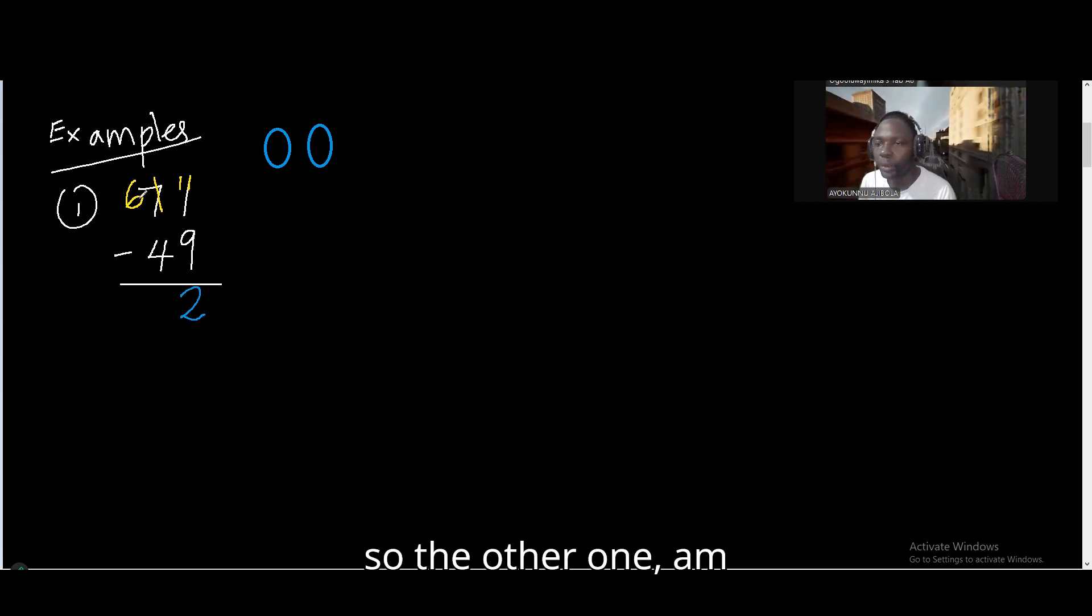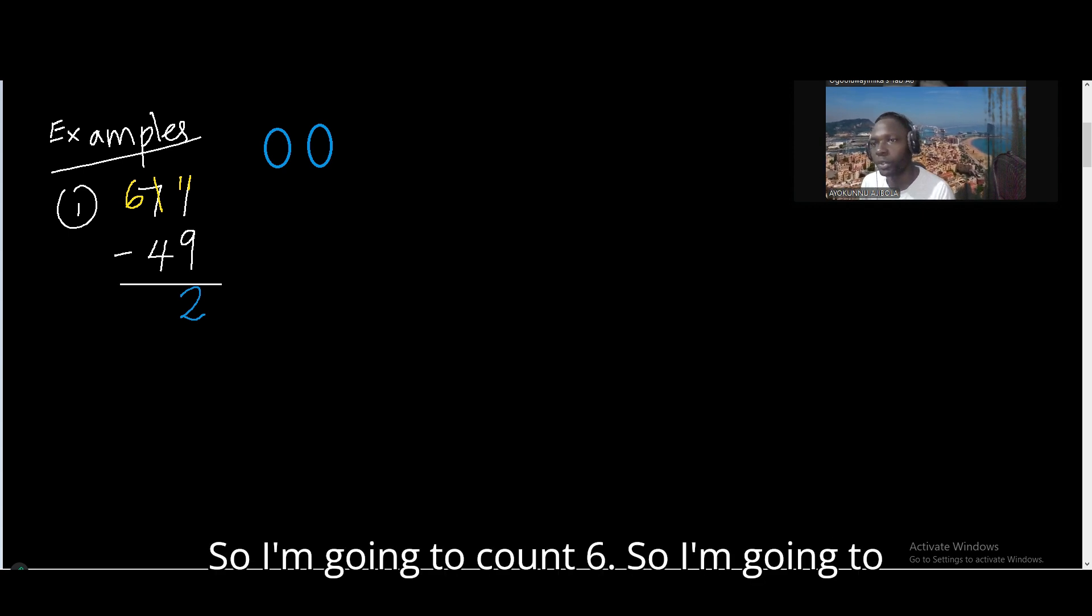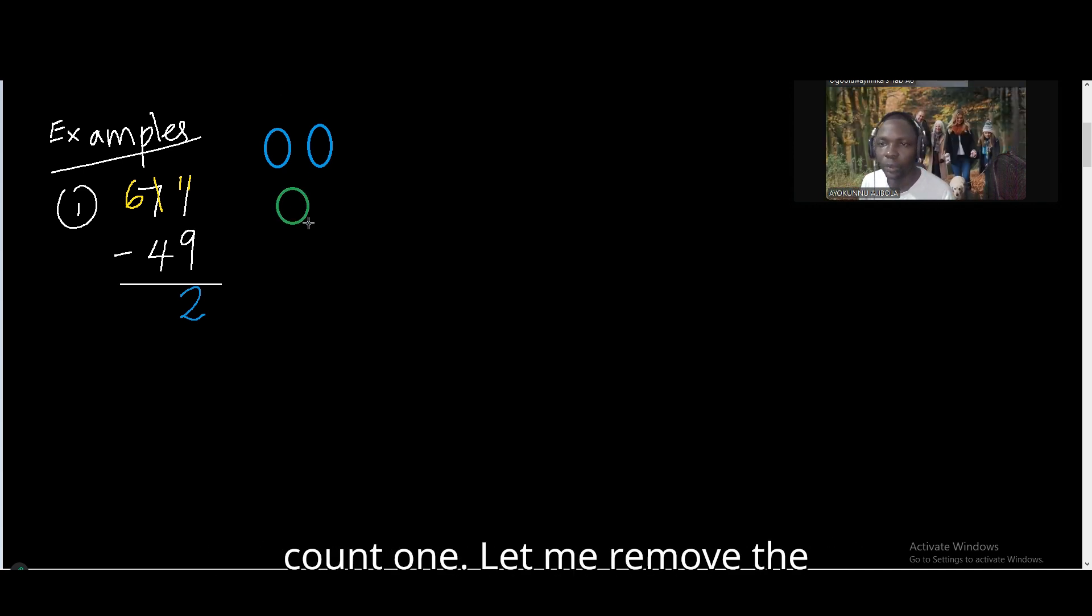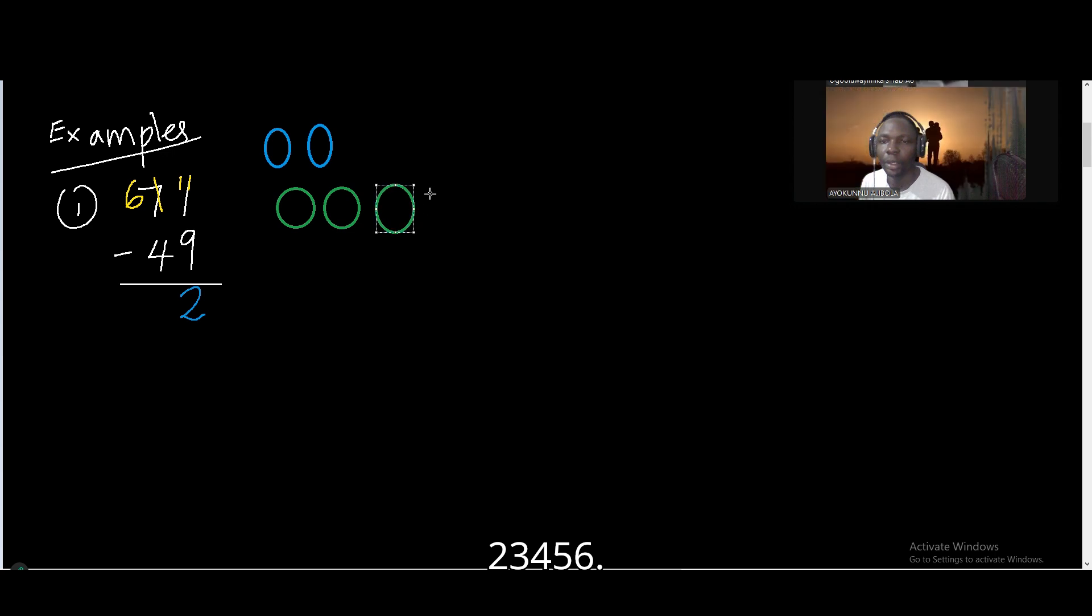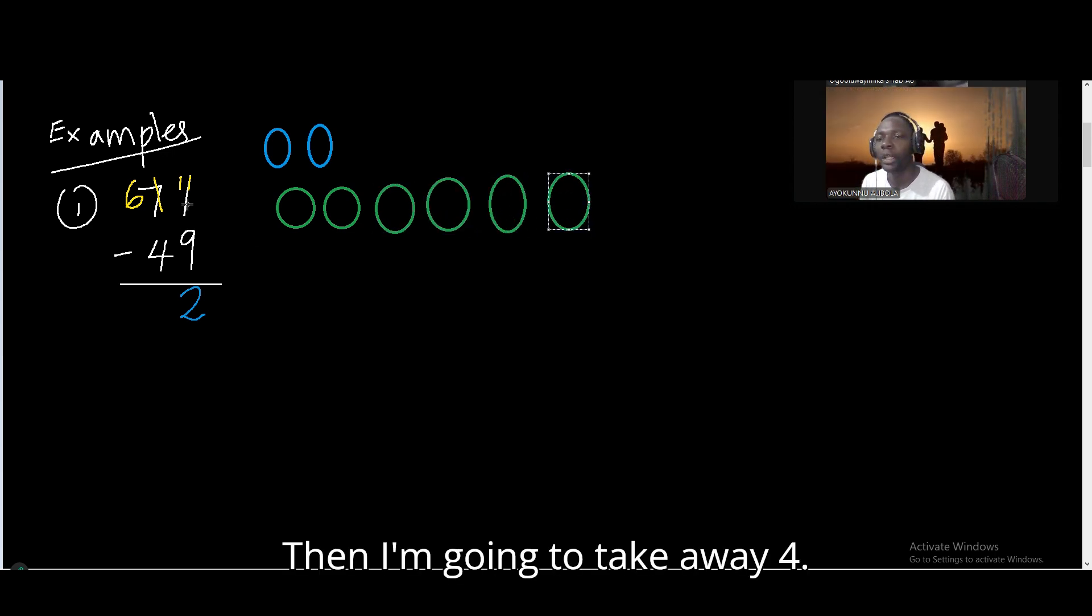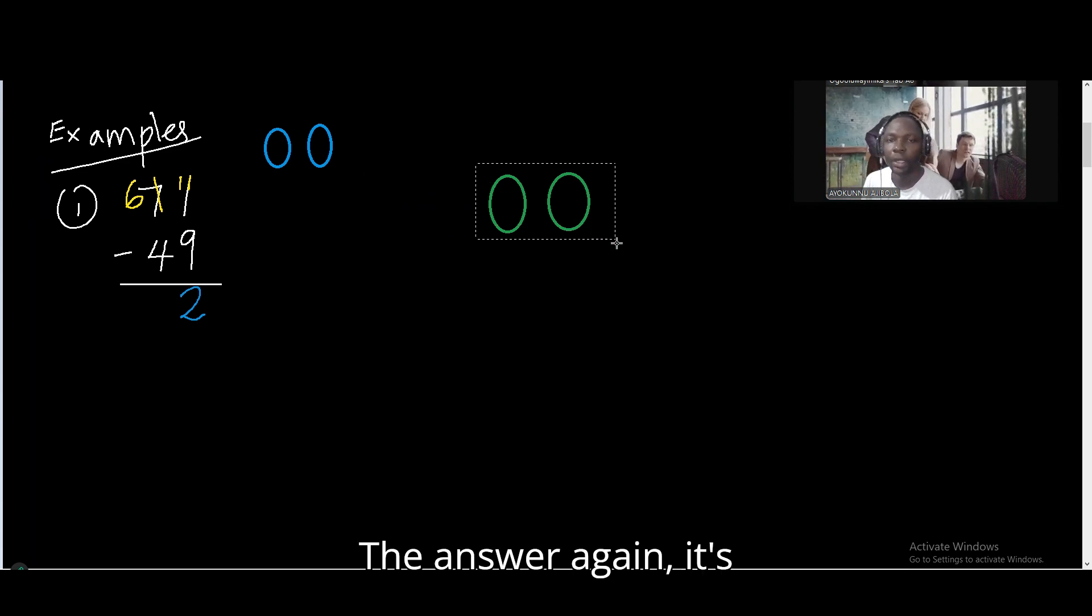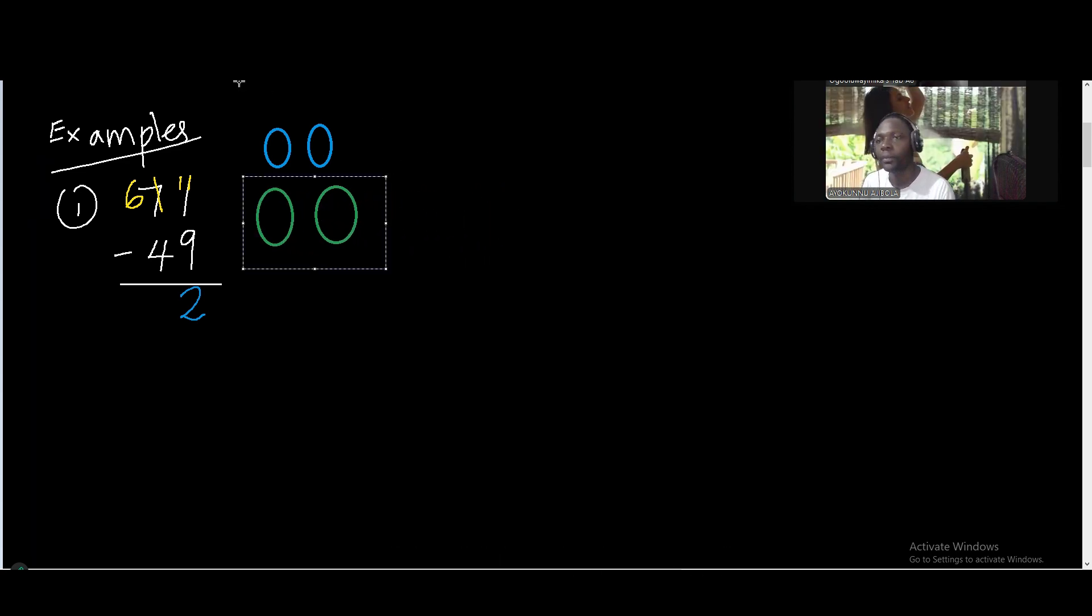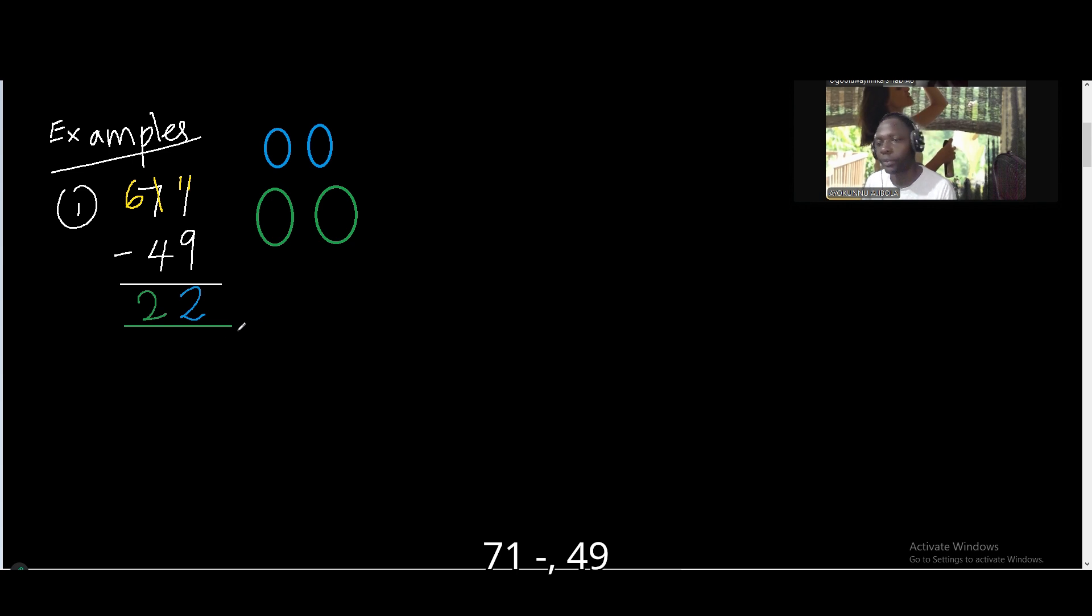So the other one. Am I supposed to count 7? No. You have to count 6. Very good job. So I'm going to count 6. Then I'm going to take away 4. The answer again is what? 2. So now you can see that 71 minus 49 is 22.